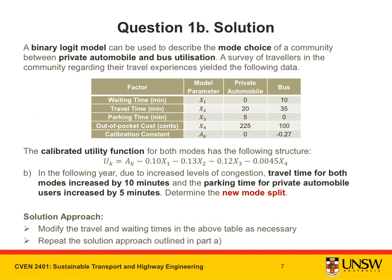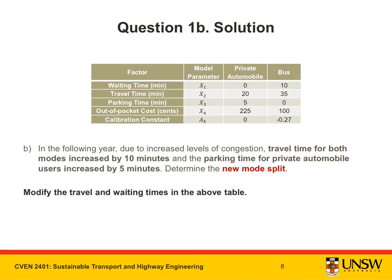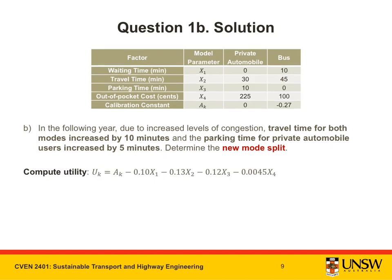Moving on to Part B, we are told that the travel time for both modes increased by 10 minutes and the parking time for private automobile users increased by 5 minutes. Given this new information, we need to make the appropriate changes to the table and then repeat the solution approach from Part A to determine the new mode split. X2, the travel time, is increased by 10 minutes for both modes, and X3, the parking time, is increased by 5 minutes for private automobiles.